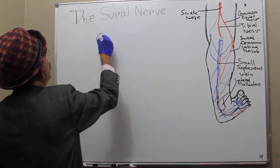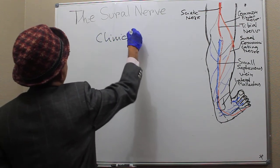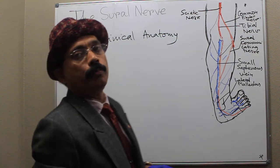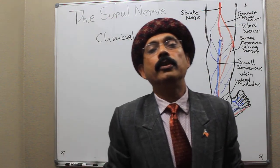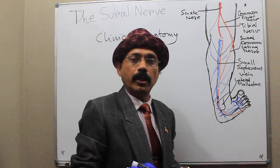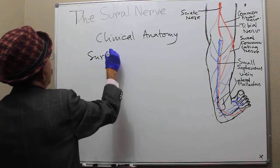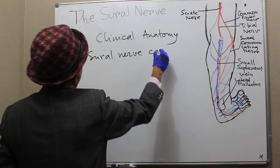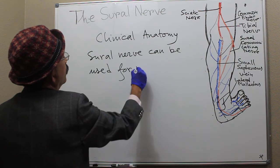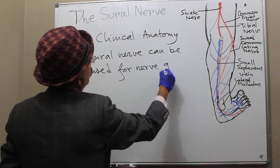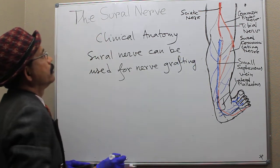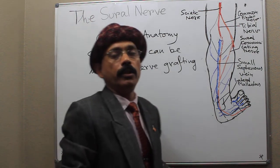We will now learn some clinical anatomy. The sural nerve is a purely sensory nerve, so the sural nerve can be used for nerve grafting. This is its main clinical importance.